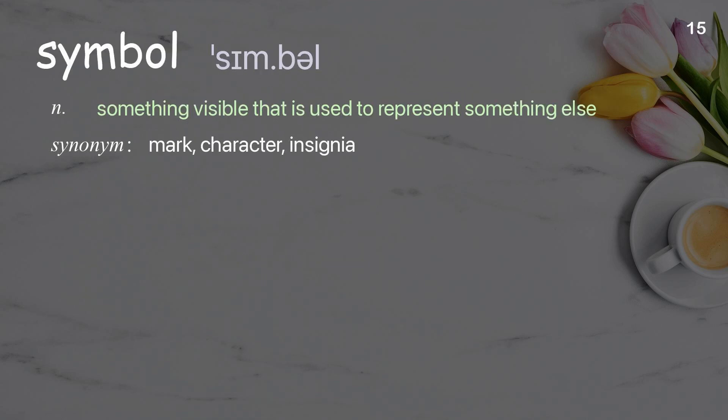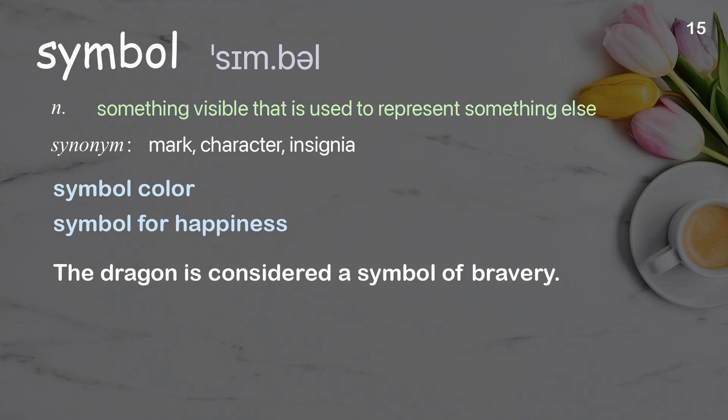Symbol: something visible that is used to represent something else. Examples: symbol color, symbol for happiness. The dragon is considered a symbol of bravery.